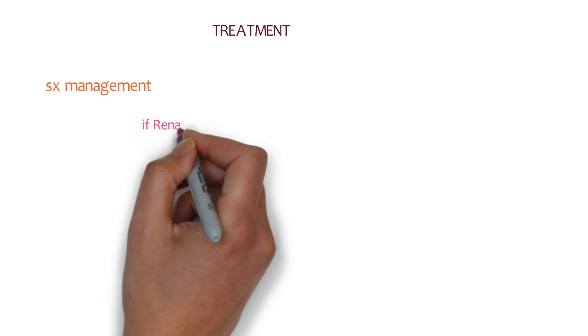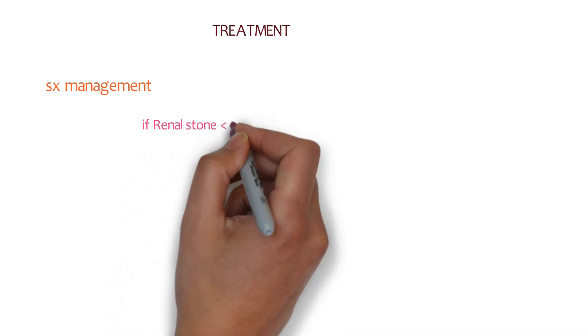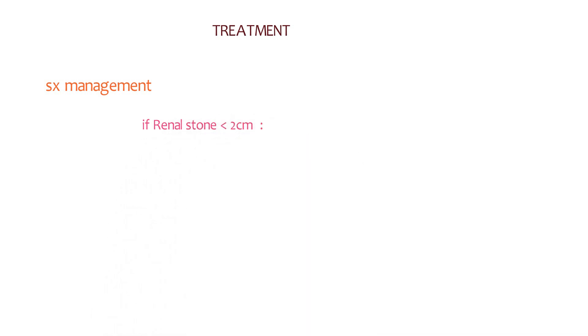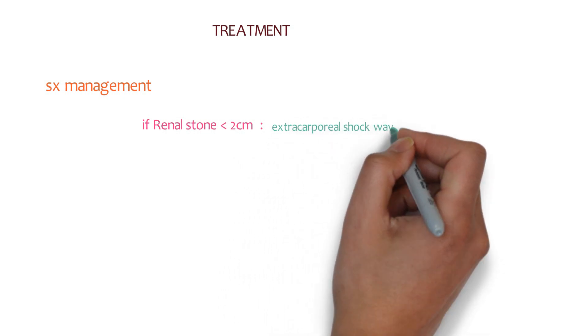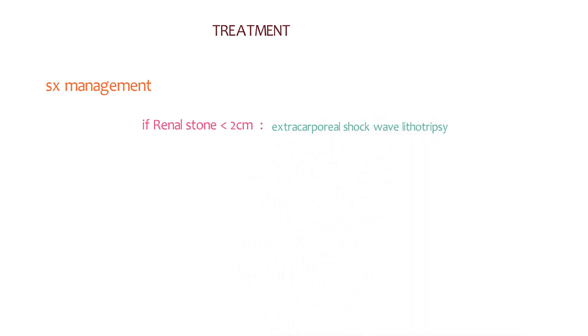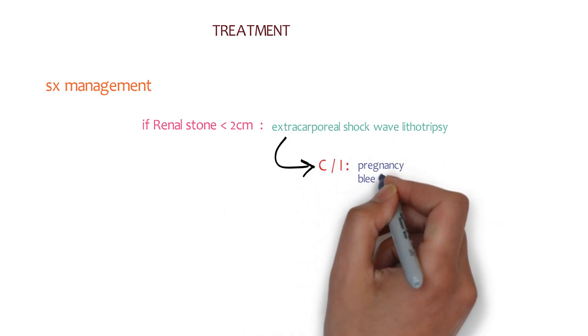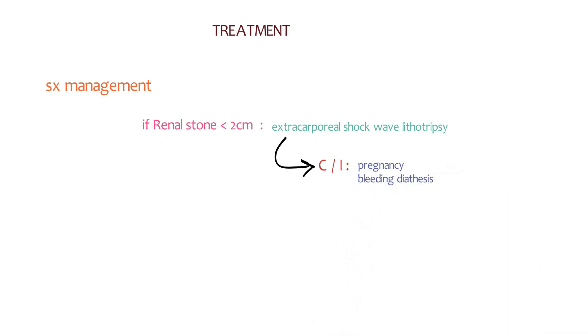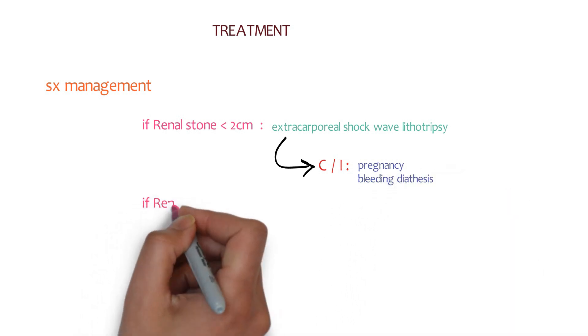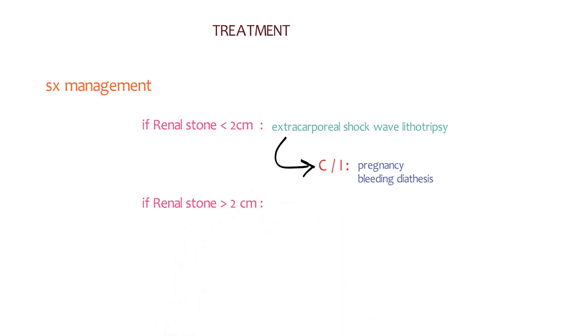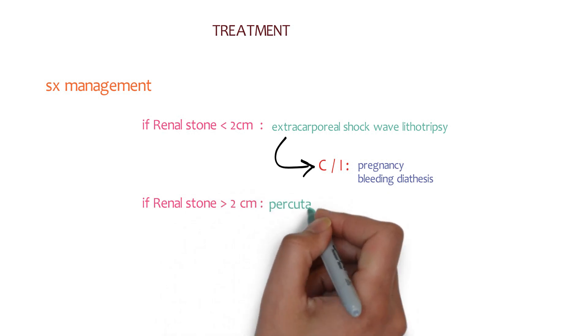What is the surgical management? Yes, if a renal stone is less than 2 centimeters, then we can do extracorporeal shock wave lithotripsy, which is contraindicated in conditions like pregnancy and bleeding diathesis. While if a renal stone is more than 2 centimeters, then we can do percutaneous nephrolithotomy. So this is the information regarding kidney stones.